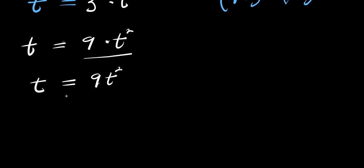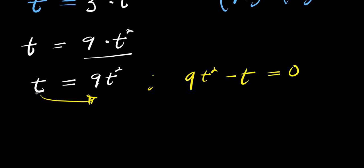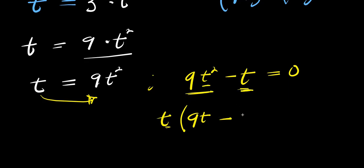Now we need to solve for t, so I move everything to one side: 9t squared minus t equals 0. What I am going to do will be to factor out t. There is t here and t here, so I can factor out t. I have t times 9t minus 1 equals 0.